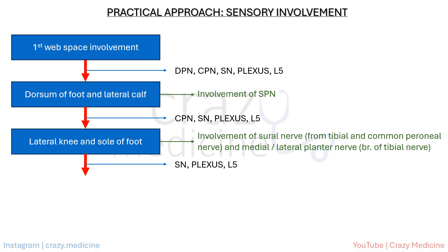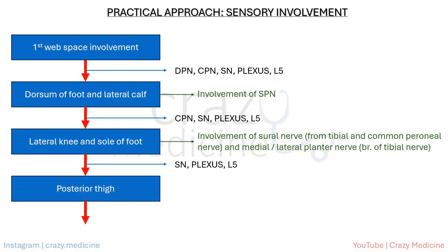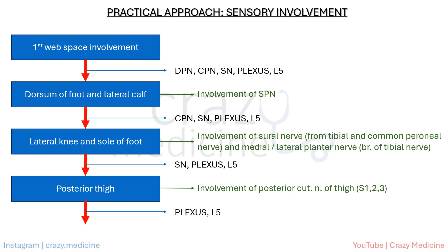Along with the above findings, if there is sensory loss at the posterior thigh, this suggests involvement of the posterior cutaneous nerve of the thigh, which is located above the sciatic nerve. Therefore, we can rule out the sciatic nerve as a potential cause. A further diagnostic workup involving the plexus and L5 can be carried out clinically, with confirmation through imaging and other diagnostic modalities like nerve conduction studies and EMG testing.